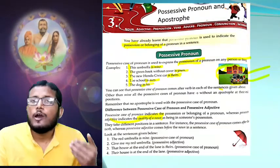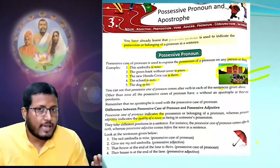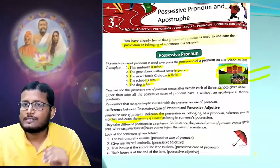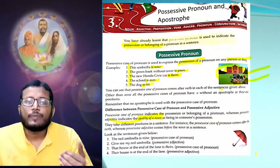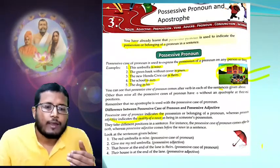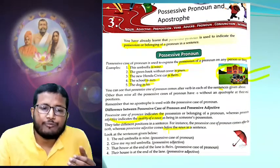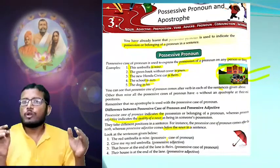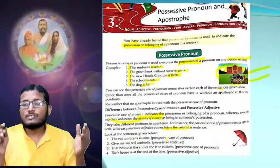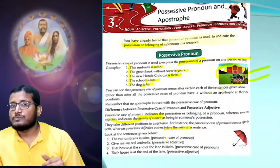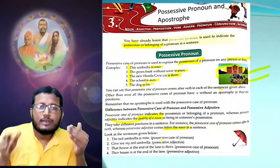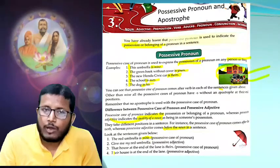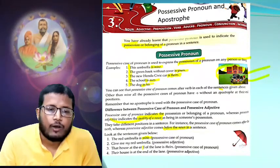Possessive adjective comes before a noun in a sentence. So the difference is: possessive case of pronoun comes after verb, and possessive case of adjective comes before noun. Let's see the examples: 'The red umbrella is mine' — the possessive pronoun mine comes after the verb. 'Give me my red umbrella' — the word my comes before the adjective/noun.